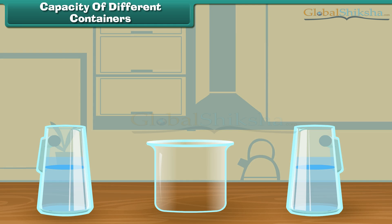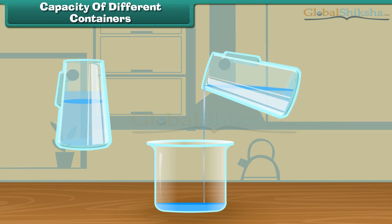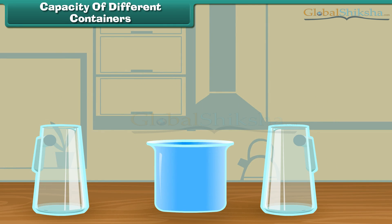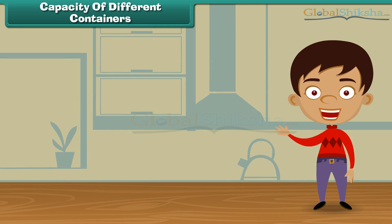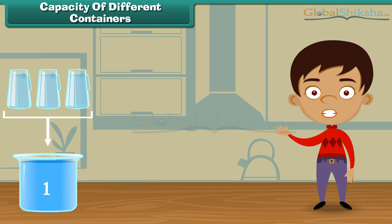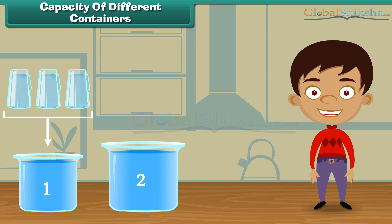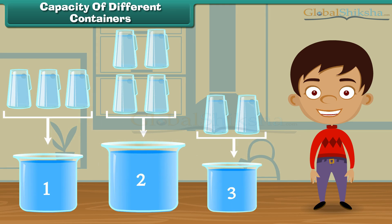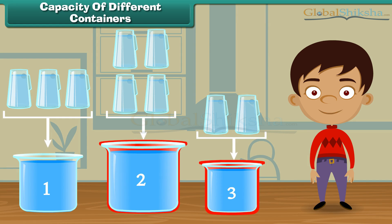Now let us fill the third vessel. One and two. Two jugs of water fill the third vessel. Friends, we have seen that vessel one is filled with three jugs of water, vessel two is filled with four jugs of water, and vessel three is filled with two jugs of water. It means vessel three holds the least water, and vessel two holds the most water.